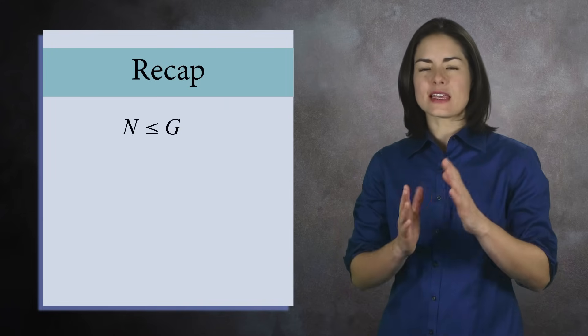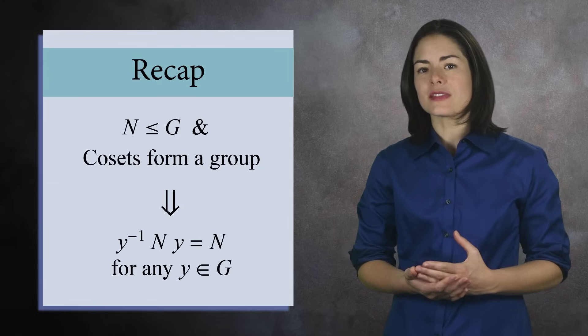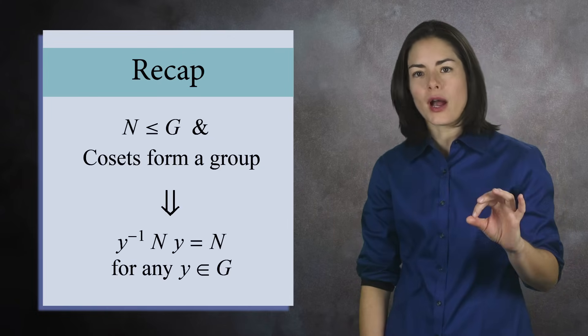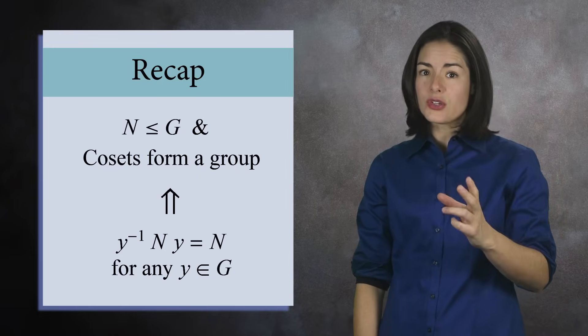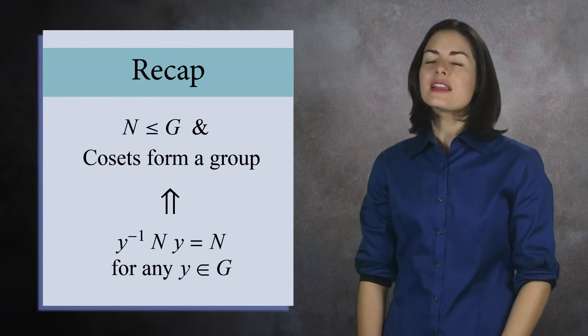We just saw that if N is a subgroup of G and the cosets behave like a group, then it must be true that the set y inverse times N times y must equal N for any y. But with a clever trick, we can show the converse is true as well. That is, if the conjugate of N always equals N, then the cosets form a group. Let's see why.